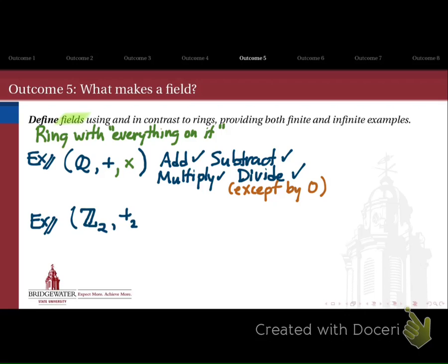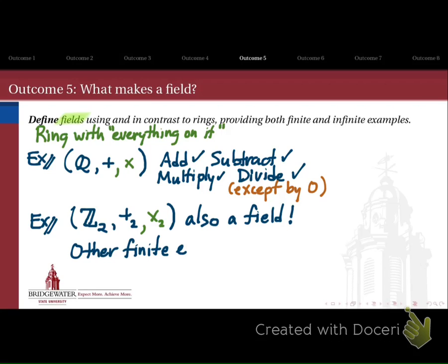That's an example with infinitely many elements. What about Z mod 2, where we have 0 and 1 with addition modulo 2? If we also endow that with multiplication modulo 2, it turns out we also get a field — but this field, unlike the rational numbers, has finitely many elements, just two. So are there other examples of finite fields? The finite fields are going to play really important roles as examples as we go forward this semester.